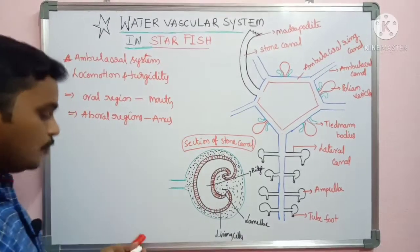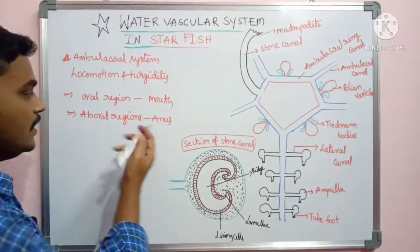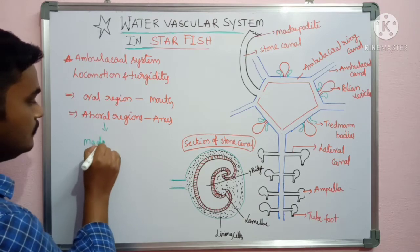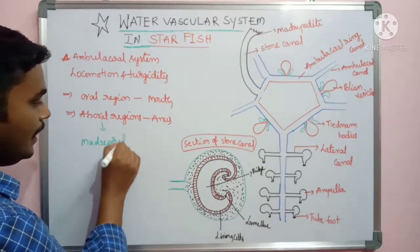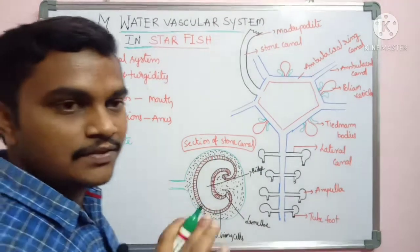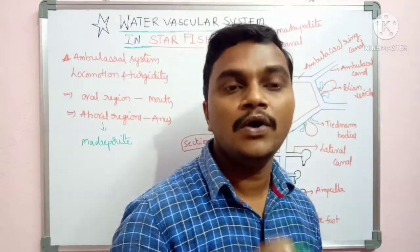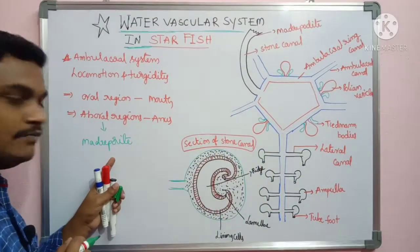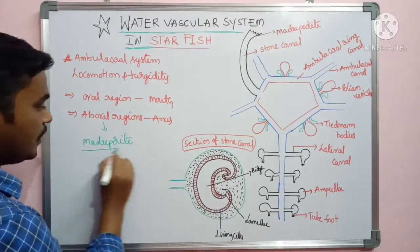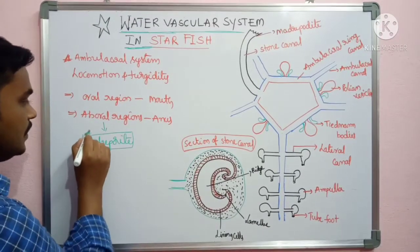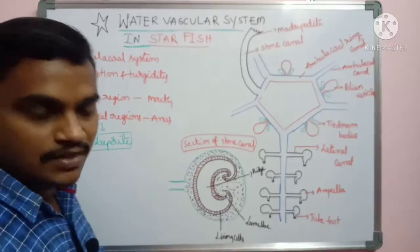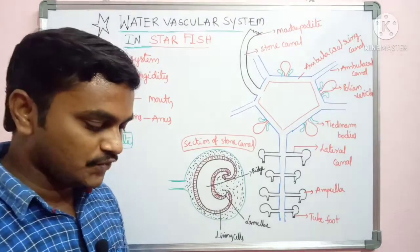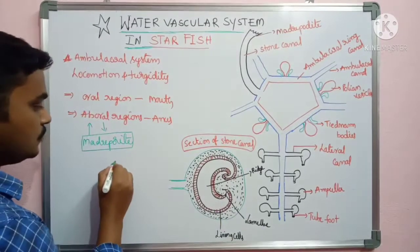In the aboral region, along with the anus, in starfishes there is one more part — that is the madriporite. The madriporite is the region where water can enter into the body of the starfish. So the madriporite is present in the aboral region of the starfish.